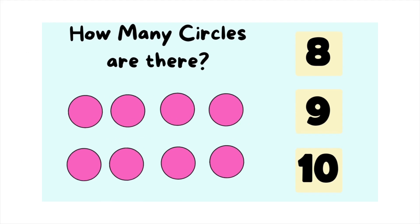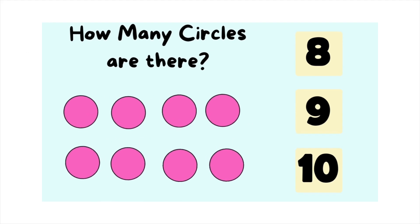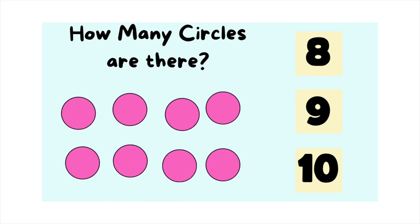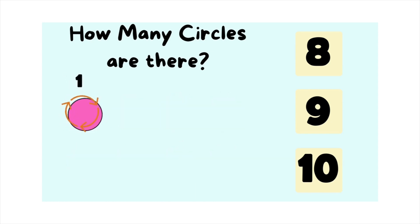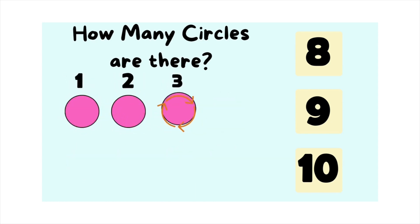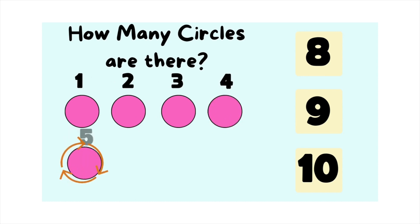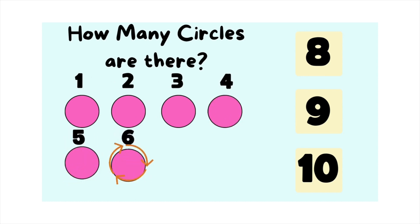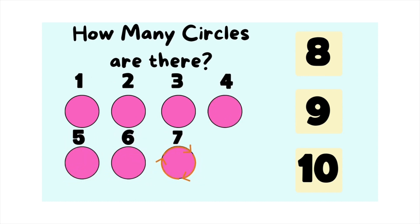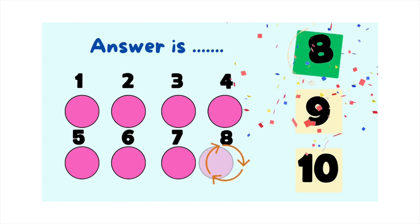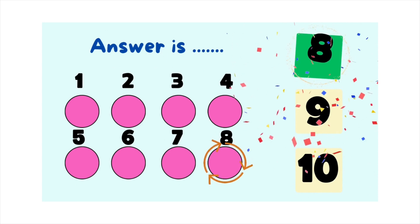How many circles are there? Let's count the number of circles. It is one, two, three, four, five, six, seven, eight circles. So the answer is eight circles.